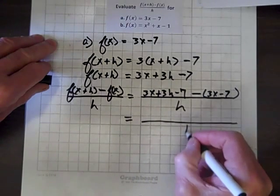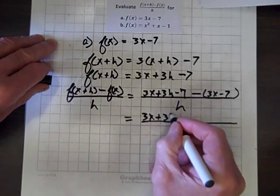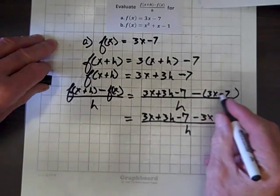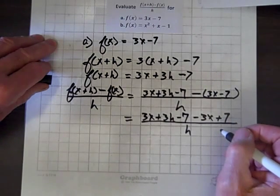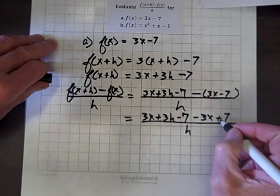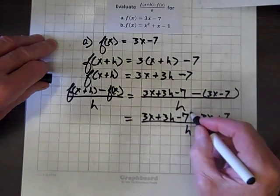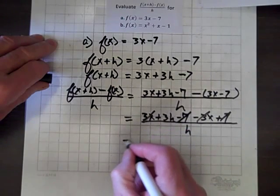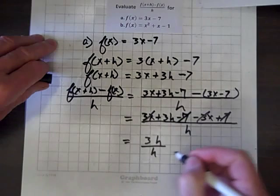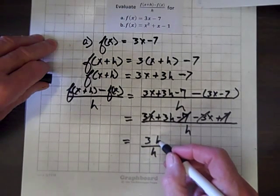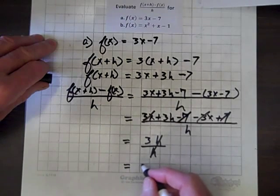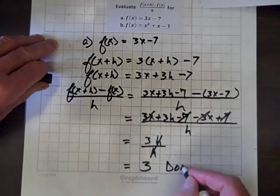Distributing the negative, we get 3x plus 3h minus 7, minus 3x, and a negative times a negative is a plus 7. The 7s have opposite signs, so they cancel out. The 3x's have opposite signs, they cancel out. We're left with 3h over h. The h's divide out, and we get 3. We are done with part a.